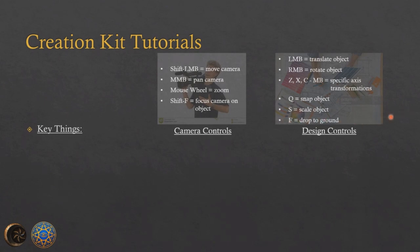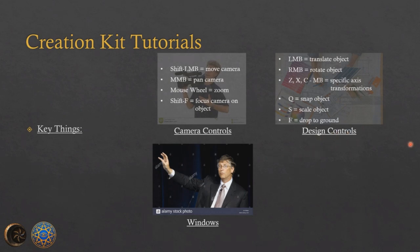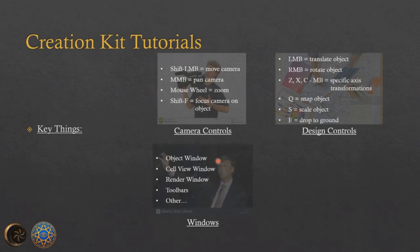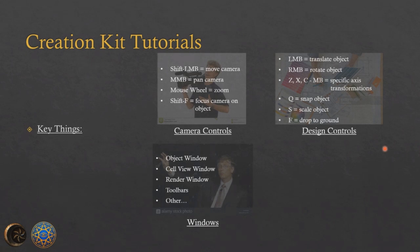For general Creation Kit navigation, remember your windows. The Object Window lists all your objects — it has a file workflow where you can browse architecture, clutter, and so on. You can open the architecture folder, then the Dunmer folder, then the interior folder, and find interior Dunmer architecture pieces. Same goes for idle markers, books, clutter, NPCs, and more.